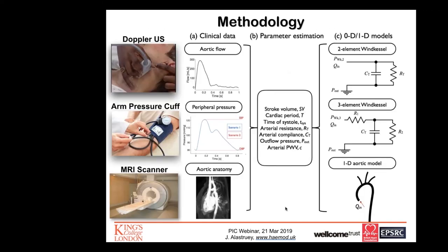We developed a methodology to estimate central blood pressure from non-invasive clinical measurements using three types of reduced-order models with increasing complexity — two 0D models and a 1D aortic model of the upper thoracic aorta. The input data is aortic flow, measurable by Doppler ultrasound or PC MRI, plus a peripheral pressure measurement from an arm pressure cuff. For the 1D aortic model, we also require the geometry of the semi-aorta by MRI. From this input data, we estimate cardiac and vascular parameters that are fed into the models, which then produce the desired central blood pressure as output.